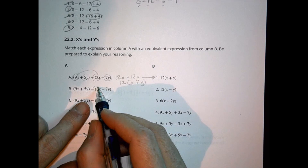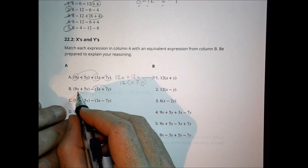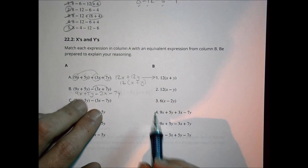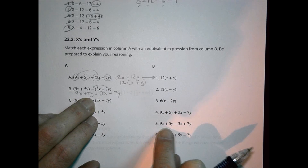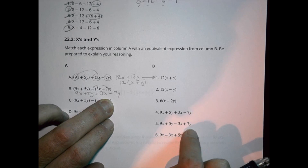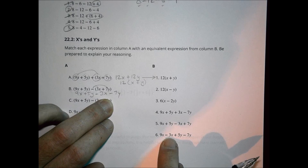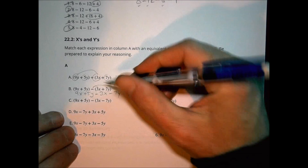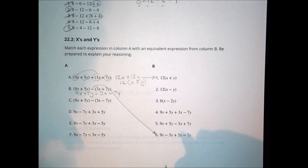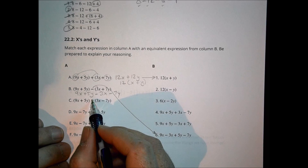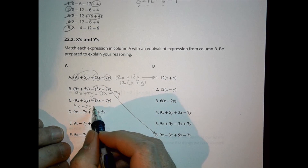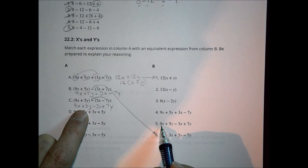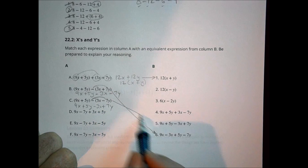For the next expression, let's distribute the minus throughout: that gives 9x plus 5y minus 3x minus 7y. Looking at the choices, I need a minus 3x and a minus 7y. Over here there's 9x minus 3x plus 5y minus 7y — those are all my parts, so B goes with number 6. For expression C, distributing gives 9x plus 5y, then minus times a positive 3x gives minus 3x, and minus times minus 7y gives plus 7y. That matches choice 5, so C goes with 5.